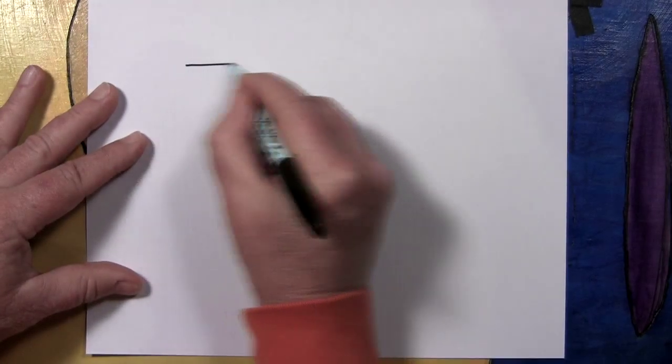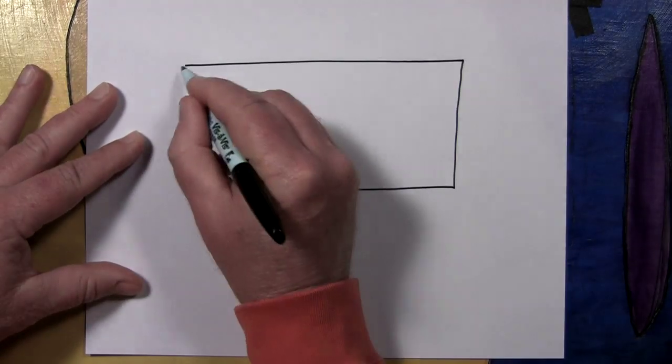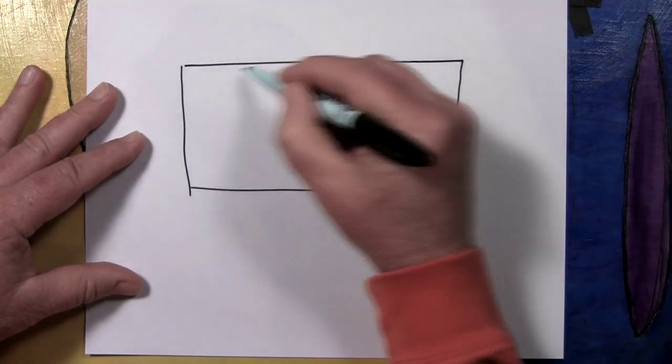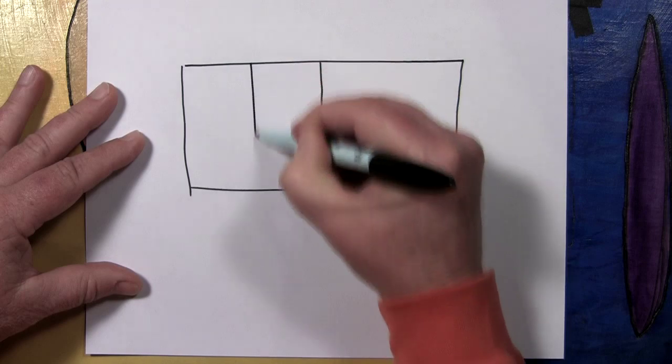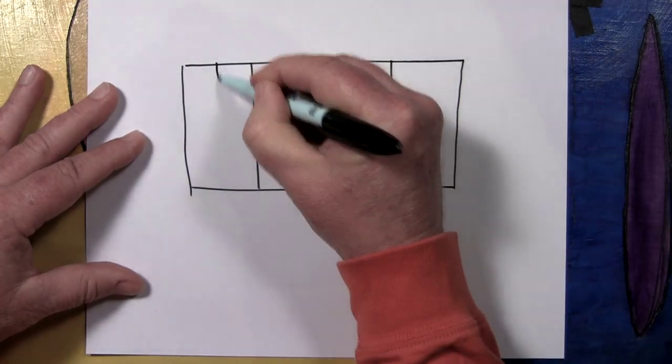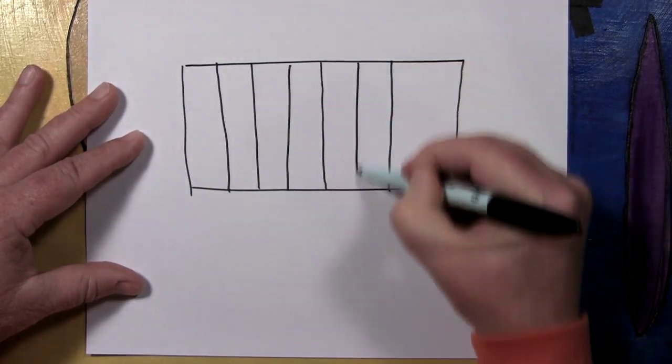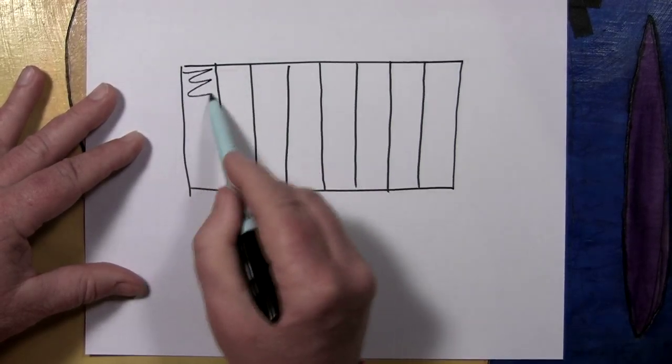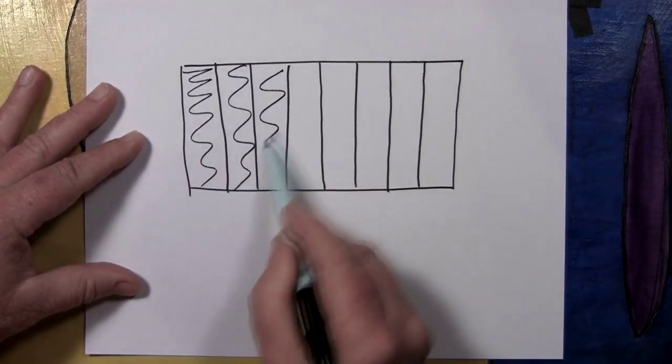And if I gave you a candy bar and said find five eighths of this please, I think you'd know how to do that too. You've done it a hundred times back somewhere in school. And you can choose any five, and you'd of course go like this.